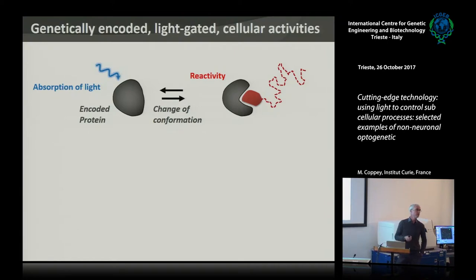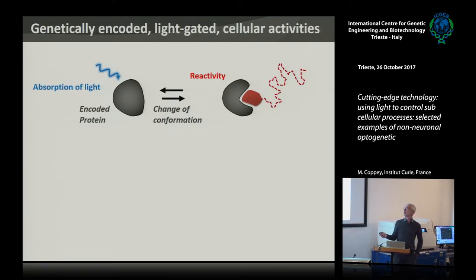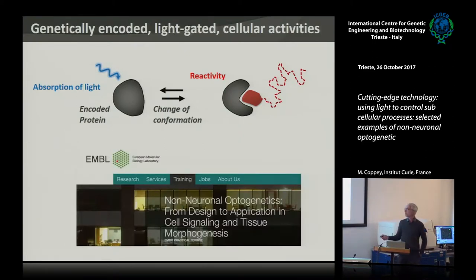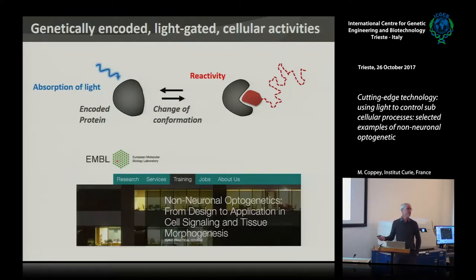I want to convince you that it's quite easy — you don't need a super high-end device to do this. Everybody doing fluorescent microscopy can do it as well. Just a bit of molecular biology, and the cell does all the good work, because the whole system is genetically encoded. That's the main advantage. This field is emerging and there's no real name for the cell biology version, which is why people call it — and there was even an EMBO practical course on it — 'non-neuronal optogenetics.'